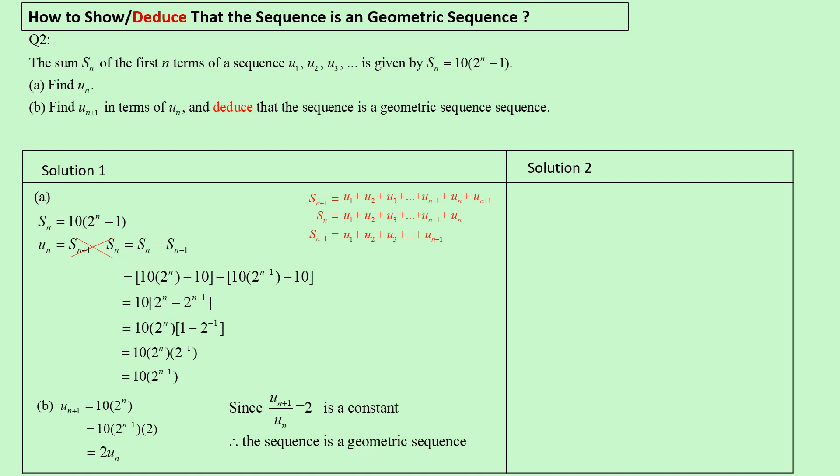Now, in solution 2, see what is this student doing? He lists up a few terms and by using a few specific terms, he finds the ratio. From here, he tries to make a general conclusion that it has the common ratio.